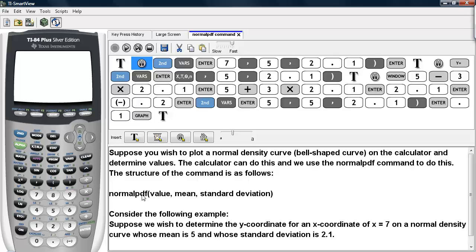You find the normalpdf command under second and vars. Then you type in the value, the mean, and the standard deviation, all separated by commas.